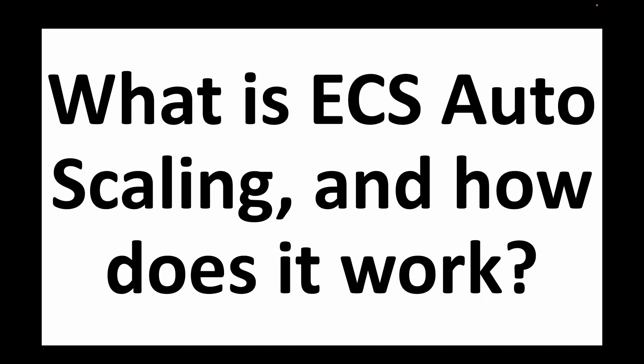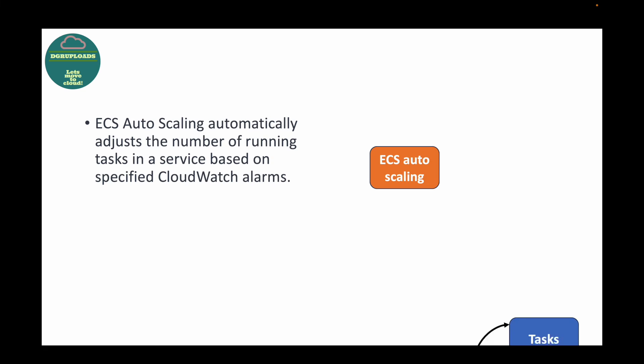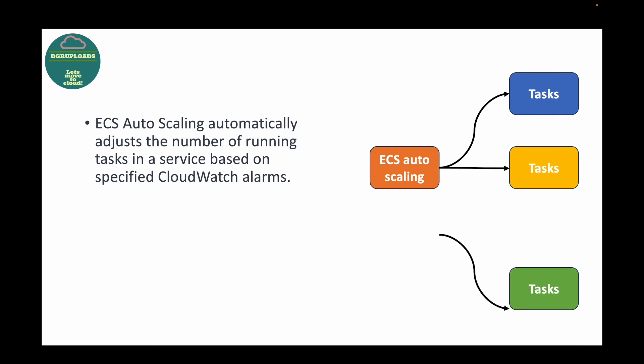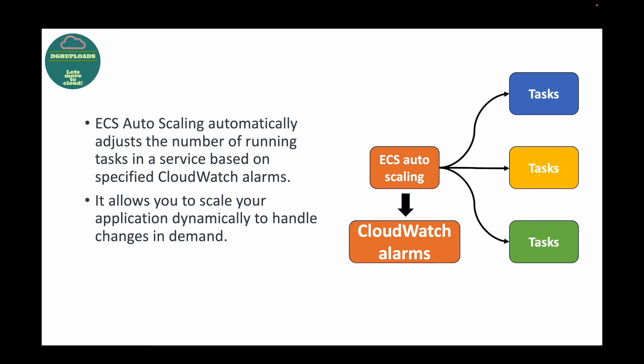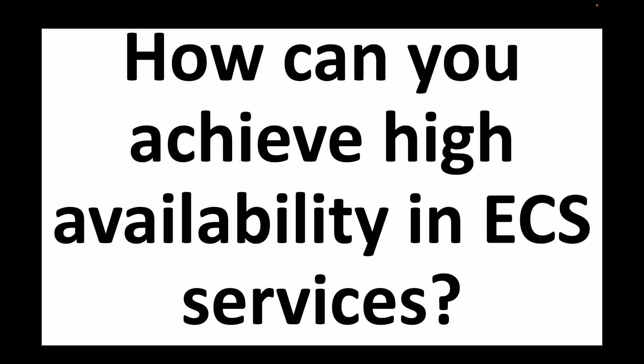The next question is: what is ECS auto scaling and how does it work? Auto scaling helps you automatically adjust the number of tasks running within a service, and this happens by monitoring your CloudWatch alarms. Based on the load or demand, you can automatically scale up or scale down your containers. This allows you to scale your resources dynamically whenever there is a change in demand or traffic — if traffic is more, launch more containers; if traffic is less, remove certain containers.